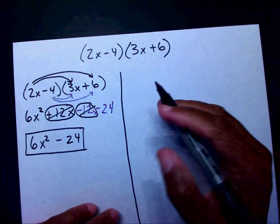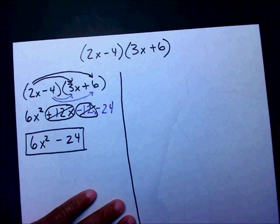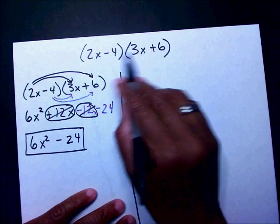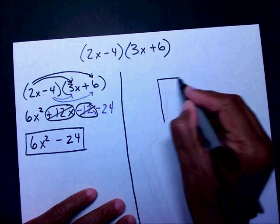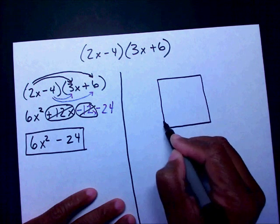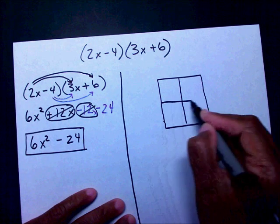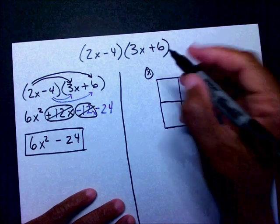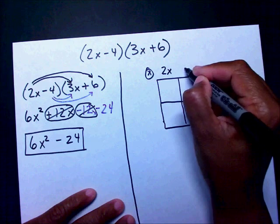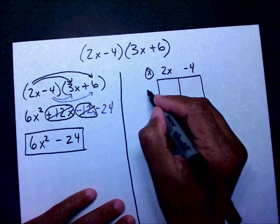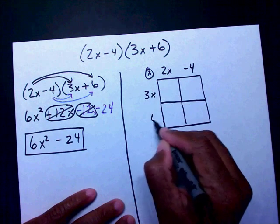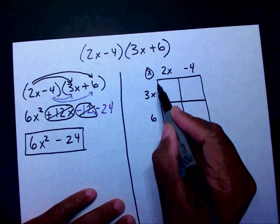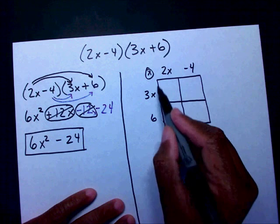The method that I prefer is called the box method. Since I'm multiplying two binomials, I'm going to make a 2 by 2 box. I have 2x minus 4 and 3x plus 6, and I write each term along the sides of the box.